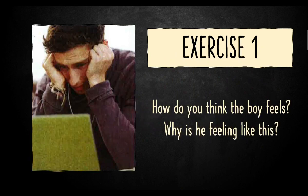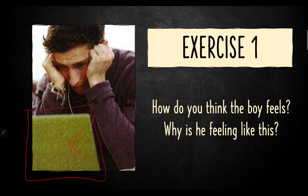Why is he feeling like this? Why do you think so? If you can see this yellowish greenish thing here and he is looking at that thing, what do you think this is? Because he is feeling that way while looking at this yellow thing. So why do you think he is feeling that way?